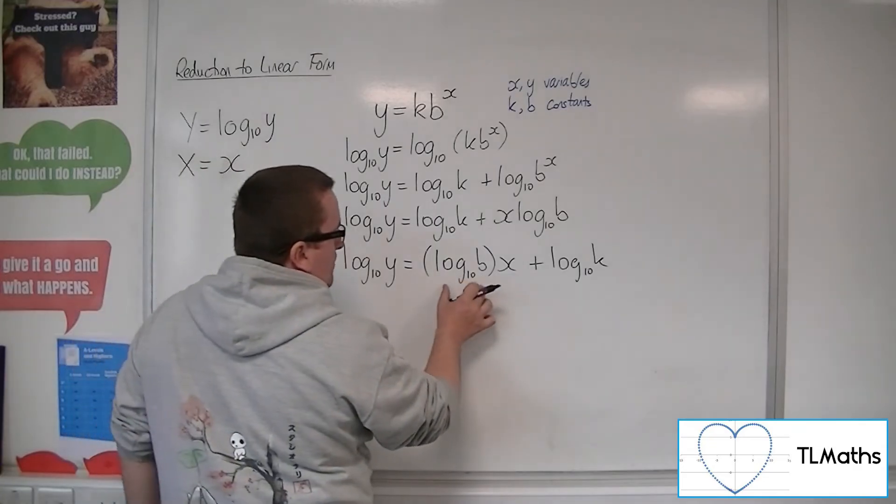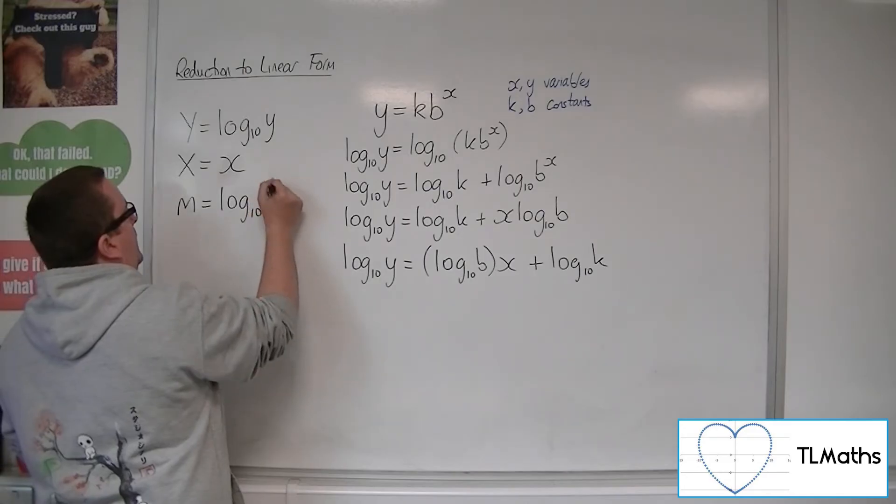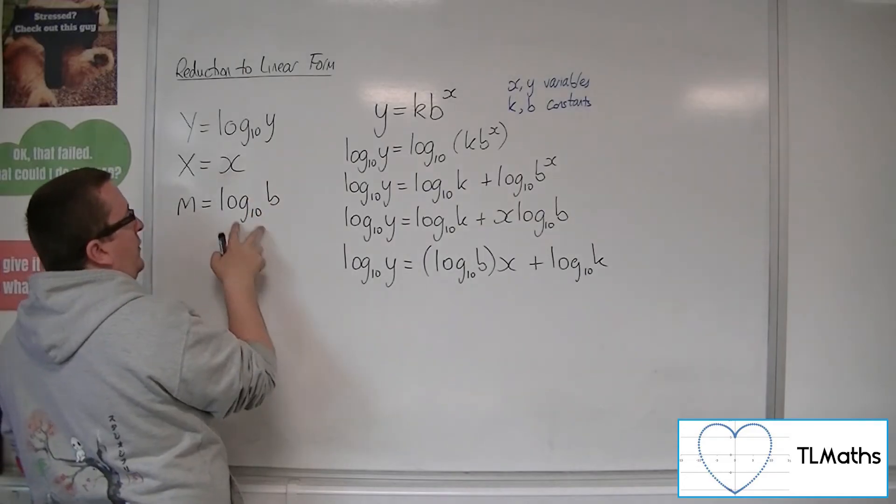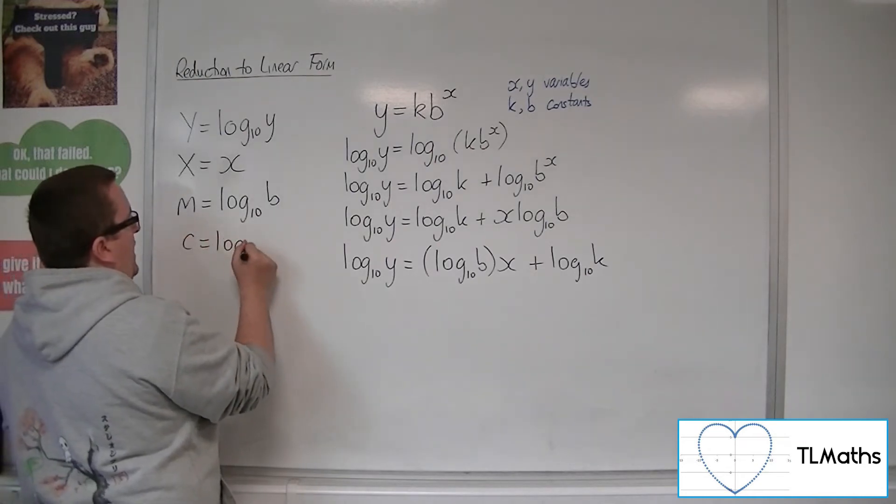Now, the log 10b being the coefficient of x, you could call that m. Seeing as log 10b will be a constant, m is a constant. C, another constant, can represent your log 10k.